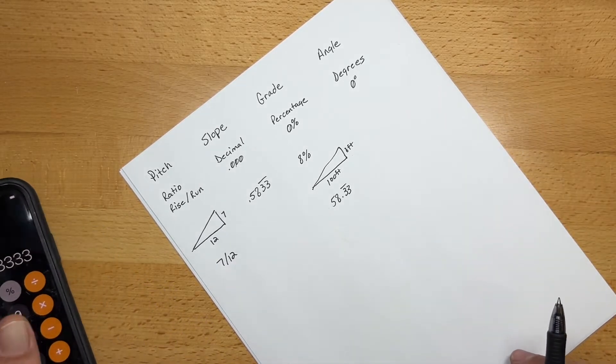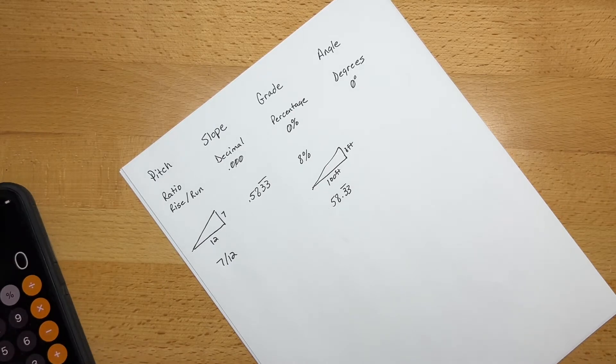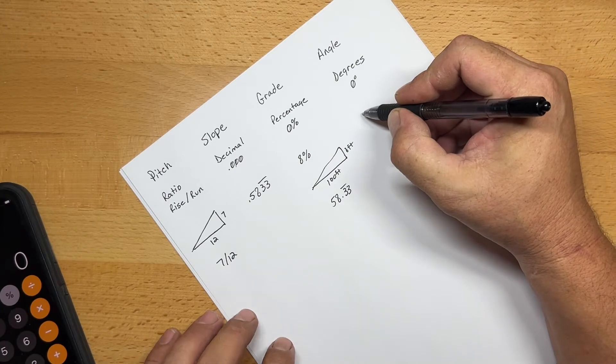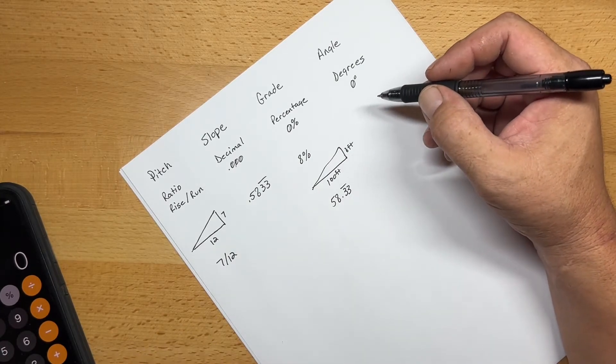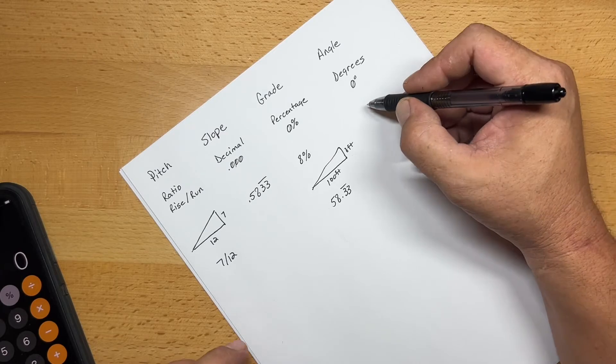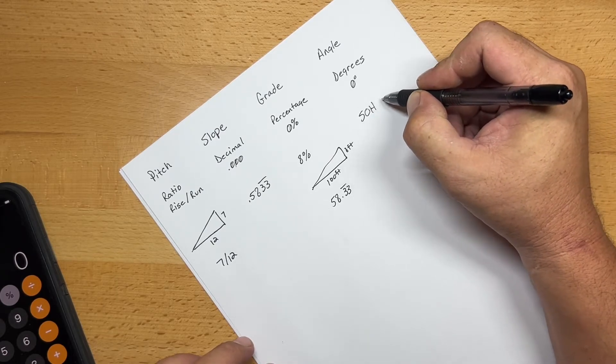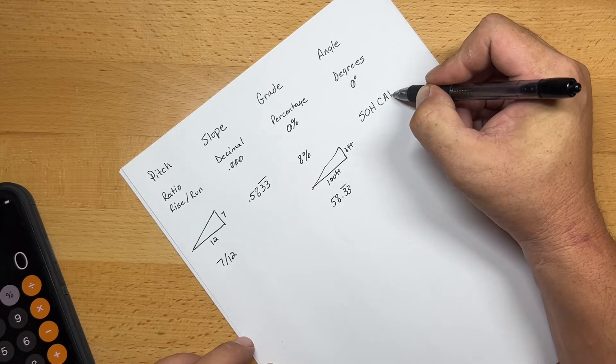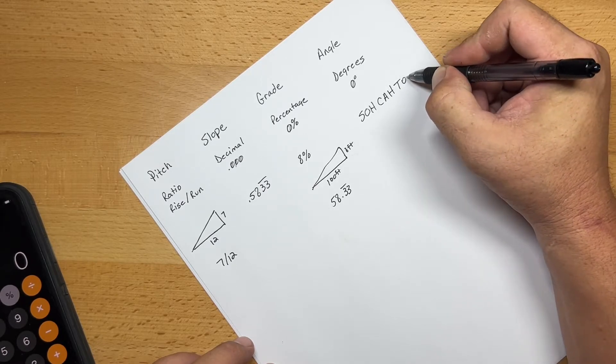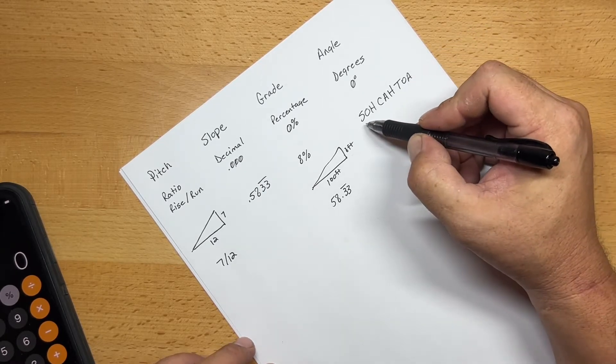Now, when it comes to angle, that's a little different. Now we have to use trigonometry functions. And so the formulas for this are usually taught phonetically. So an educator will usually teach this as SOHCAHTOA.